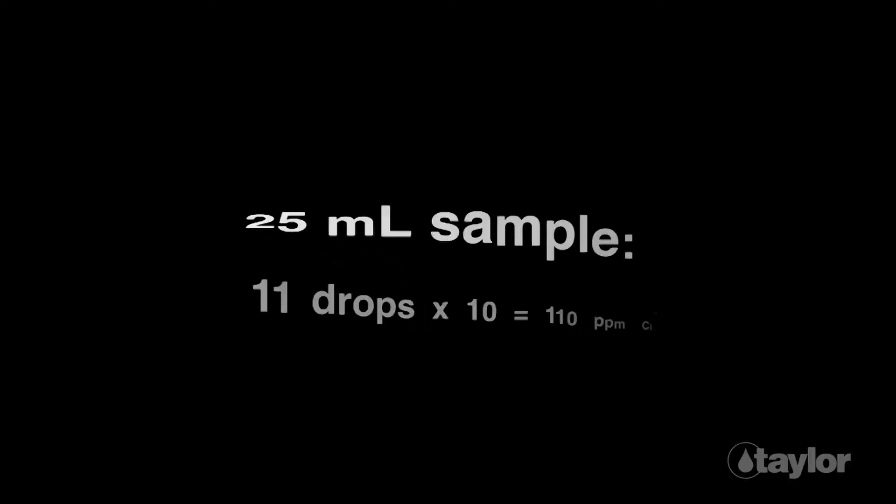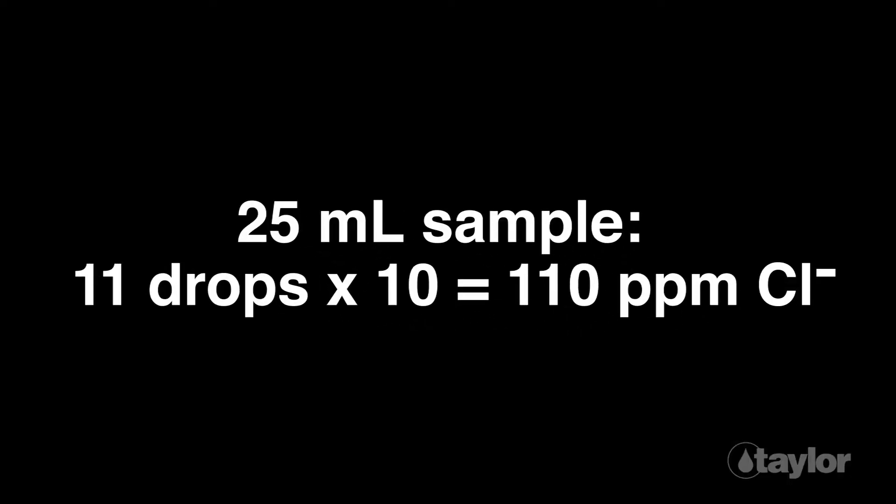Multiply the number of drops of silver nitrate reagent expended by 10 and record your result as parts per million chloride. If using a 14.6 ml sample, record the result as grains per gallon chloride.